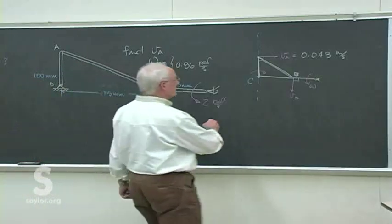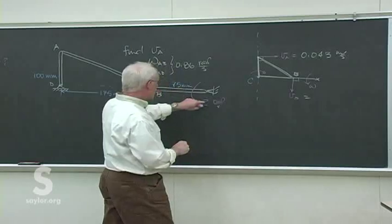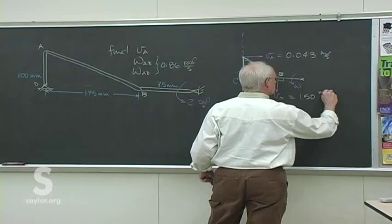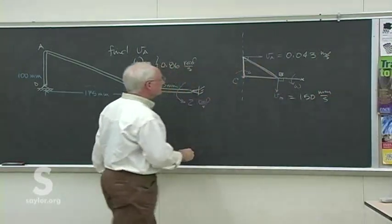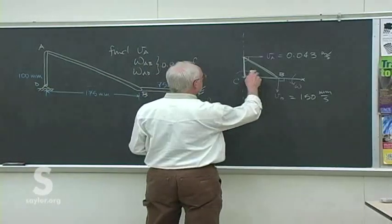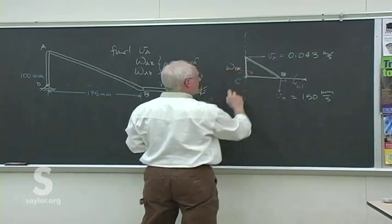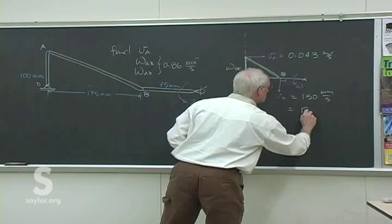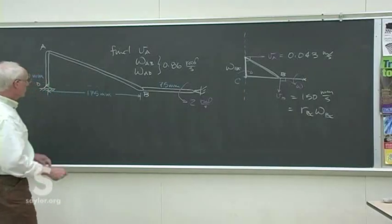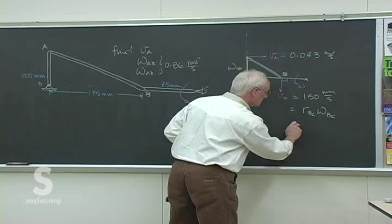VB is 75 times 2 equals 150 millimeters per second. Then we can use that to find omega_BC: VB equals R_BC times omega_BC. If that's 175 and that's 150, then omega is 0.086 radians per second... actually just 0.86.